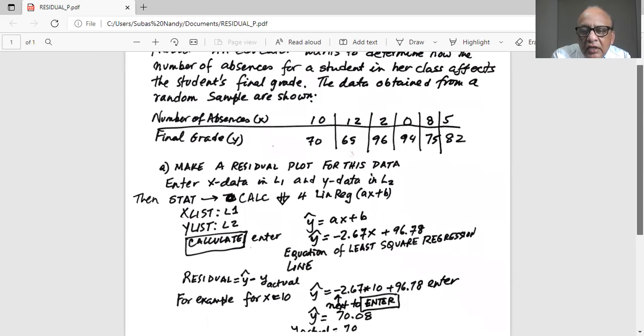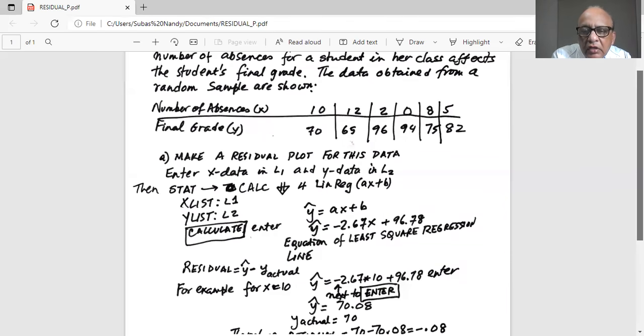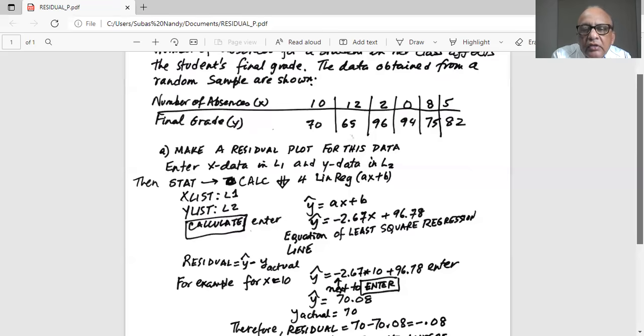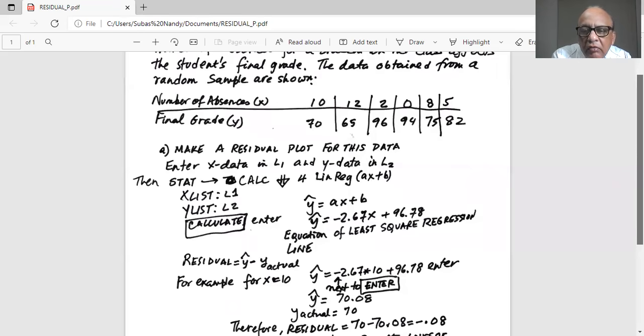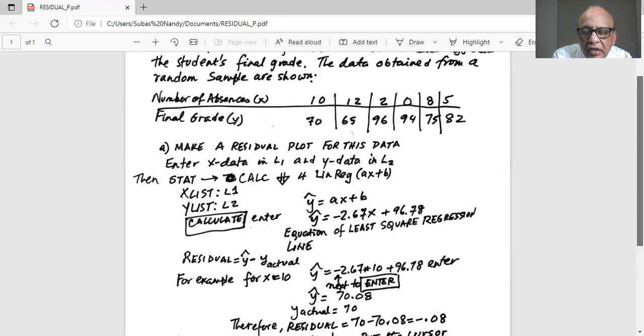So when we hit enter, we get the regression line equation, which is Y hat, which is the predicted value of Y is equal to minus 2.67, which is the slope, which is the term A in front of X plus B, which is the intercept 96.78. This is the equation of the least square regression line.